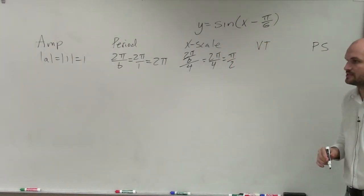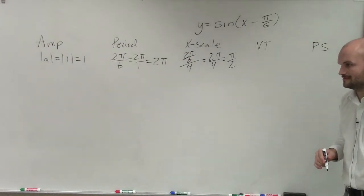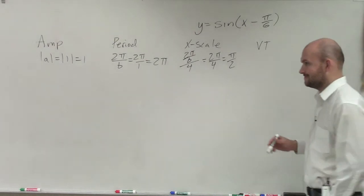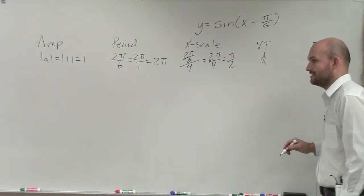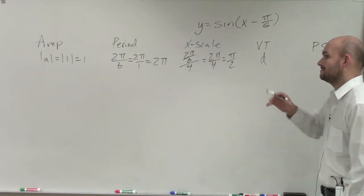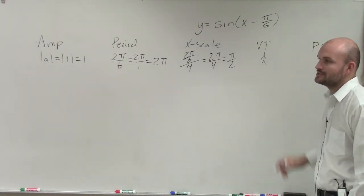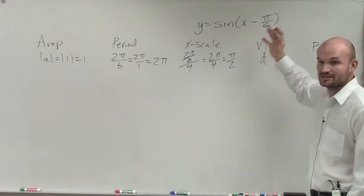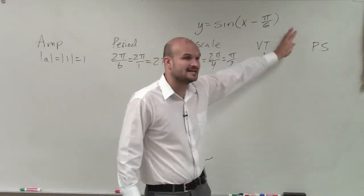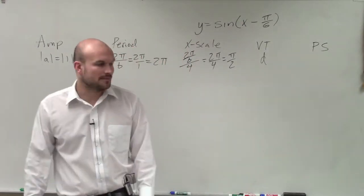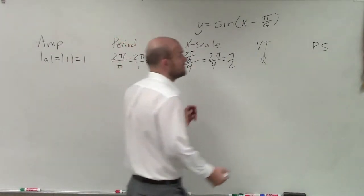Our vertical transformation is d. Our vertical transformation is d, so therefore that's going to tell you if you're going to be shifting your graph up or down at all. We see that we are not adding anything outside of our function. So then again, we're not shifting the graph up and down.